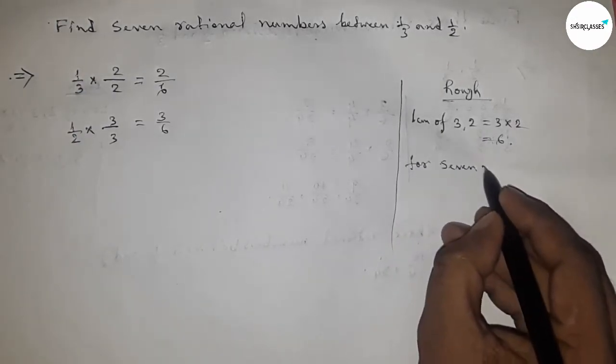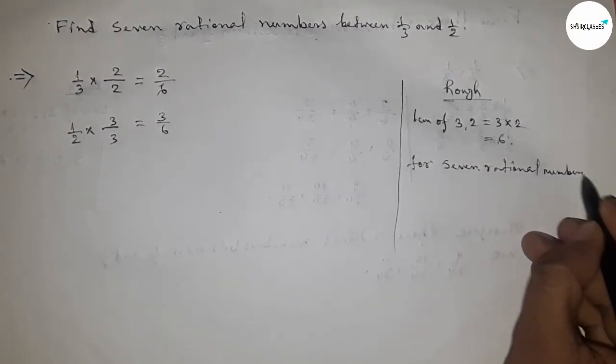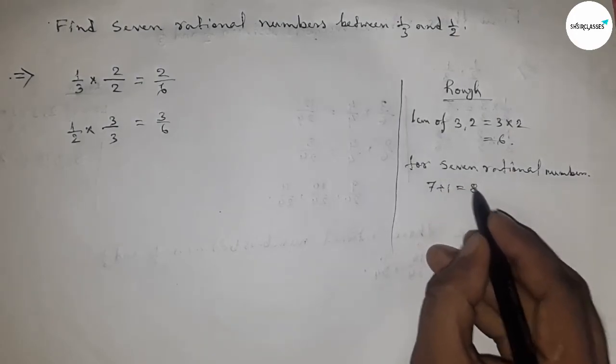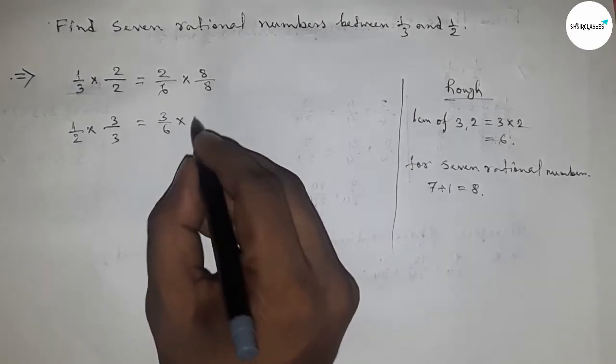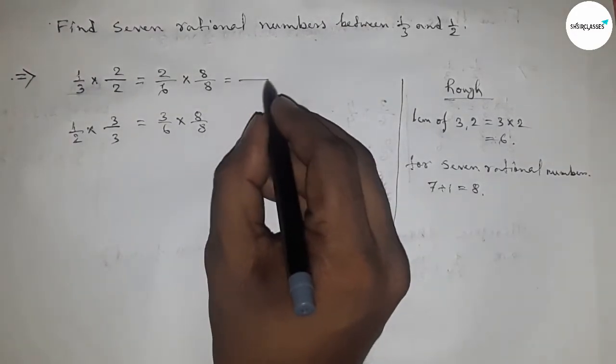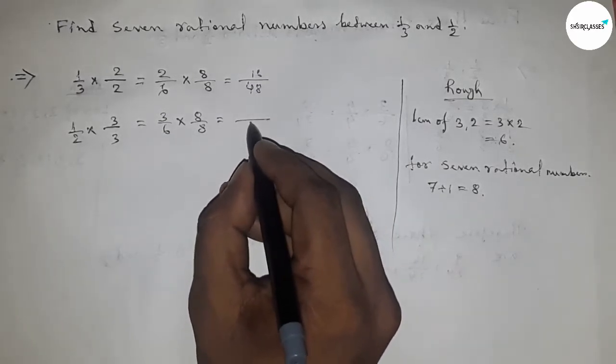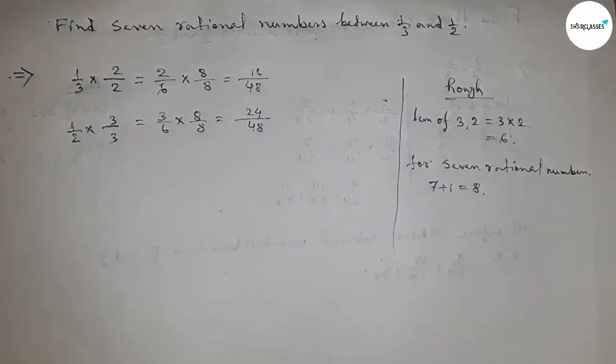Now for seven rational numbers, we have to follow a rule. We have to multiply by 7 plus 1 equal to 8. So we multiply here 8 upon 8 and here 8 upon 8. This gives us 16 by 48 and 24 by 48.